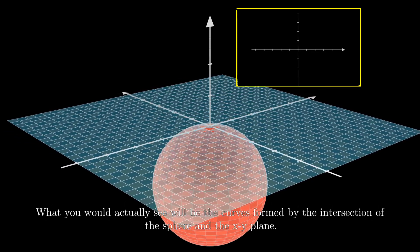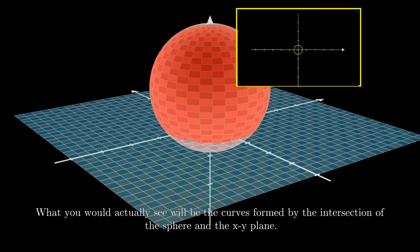What you would actually see would be the curves formed by the intersection of the sphere and the XY plane.